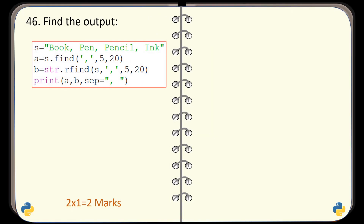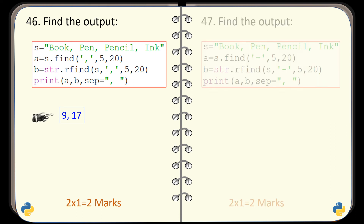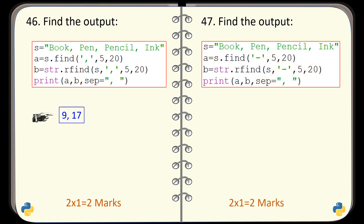Question number 46. Find the output generated by this code. And the output is this one. Question number 47. Find the output generated by this given code. And the output generated is this one, because dash is not found in this string, so the functions find and rfind both return minus one.